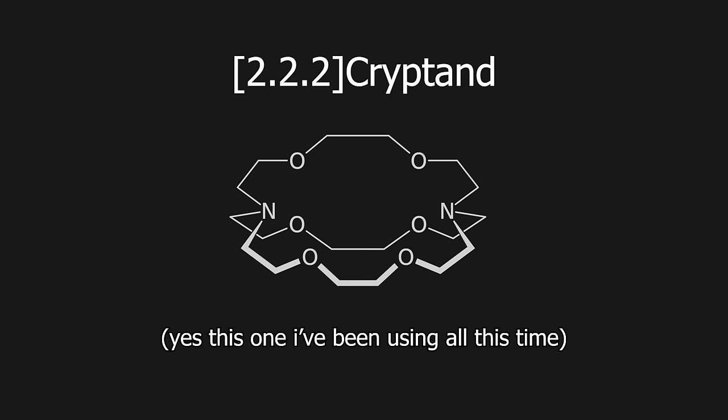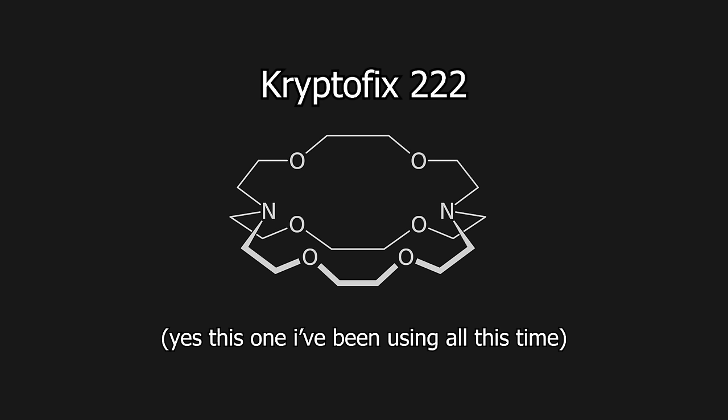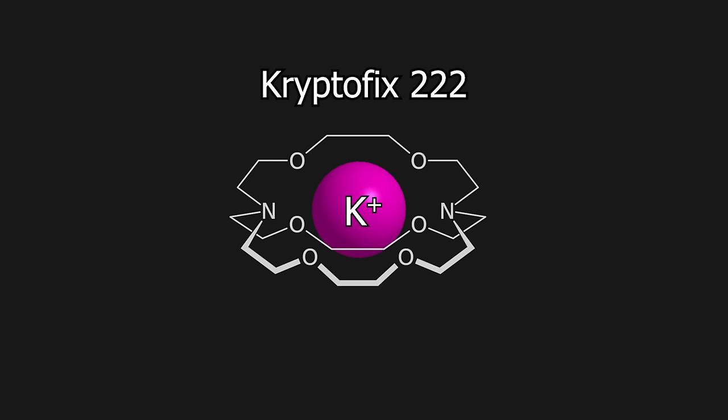The most common and important cryptand is 222-cryptand, which also goes by the name Cryptofix-222, which preferentially binds the potassium cation. Now there isn't really anything specific I wanted to do with it, but I just like these types of molecules, so let's just see how they can be made.